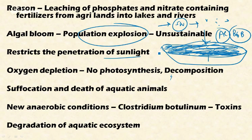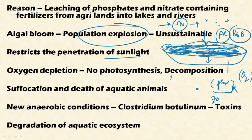This restriction of sunlight penetration results in the reduction of phytoplankton growth. Phytoplanktons are an important source of oxygen through photosynthesis and are the basic food source for zooplanktons and subsequent organisms in the aquatic food chain. Consequently, the restriction of sunlight results in a reduction in oxygen concentration in the water.